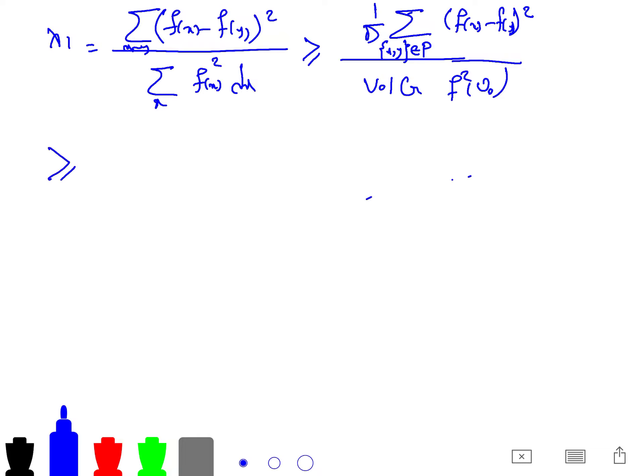And this is greater than 1 over d, (f(v0) - f(u0))^2. I will explain that it is just using some fact about telescopic sum. And then volume of g times f^2(v0).